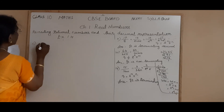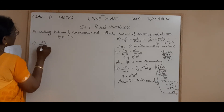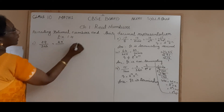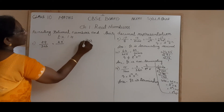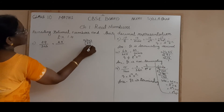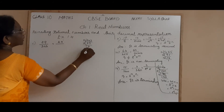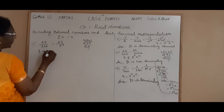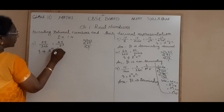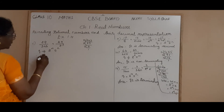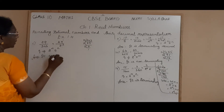Sum number 5: 29 by 343. Now 343 is 7 cubed — all of you know that. It is divisible by 7: 7 into 49, 7 into 7, 7 into 1. So it is 7 cubed. Therefore Q is not in the form of 2 power M into 5 power N. Therefore the answer is: it is a non-terminating decimal.